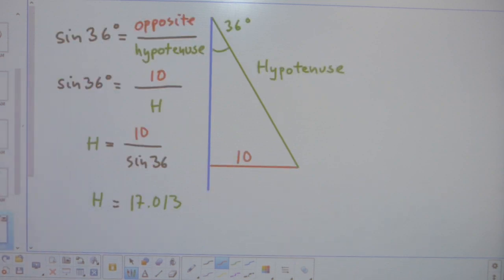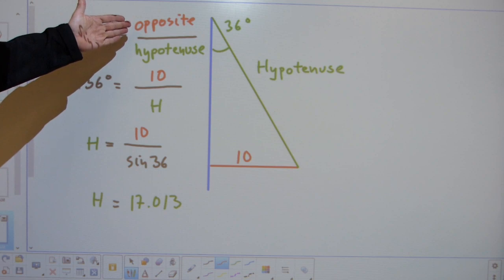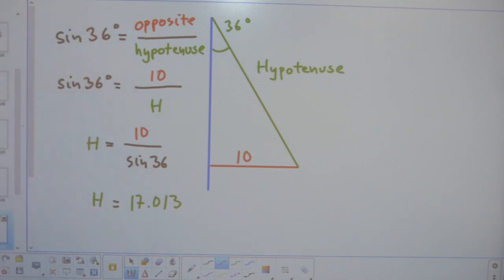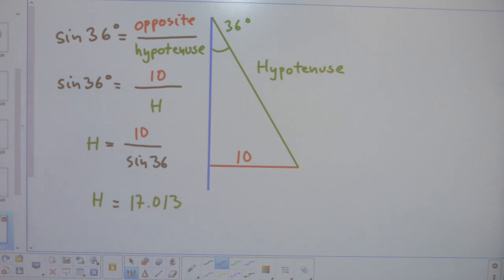The math takes place here. It's either sine, cosine or tangent function that gets it done. Of course, it's a sine function, because sine of an angle equals opposite over hypotenuse. Then when I replace the words with the actual numbers given, I get this. Once you solve the equation, you get 17.013 for the length of the hypotenuse.